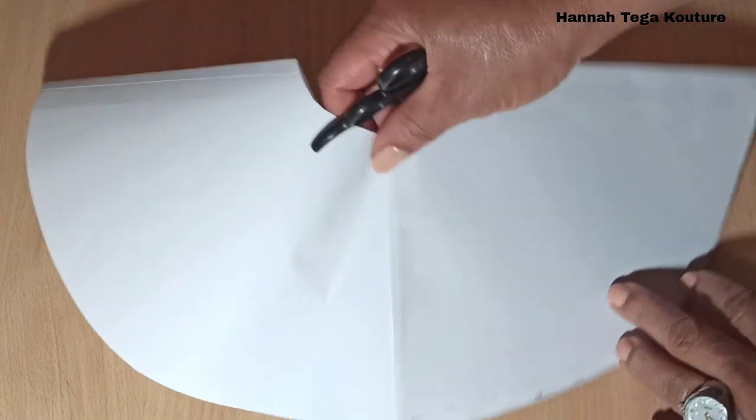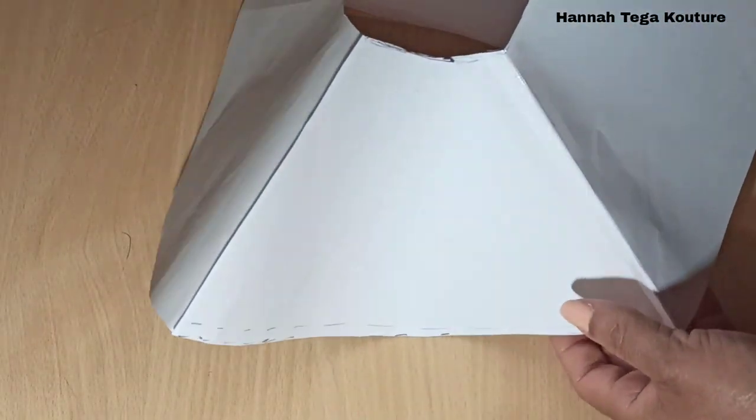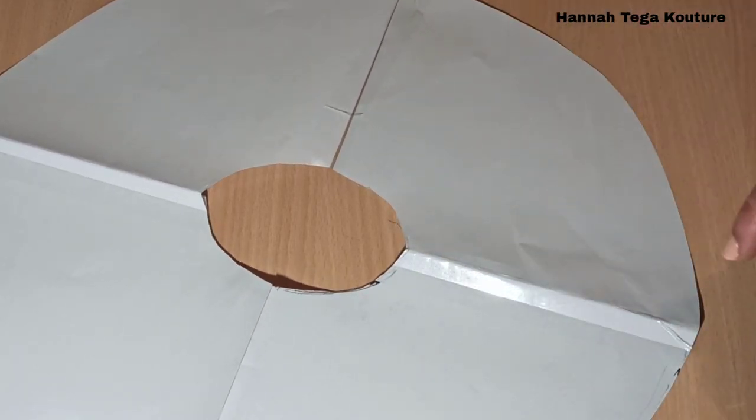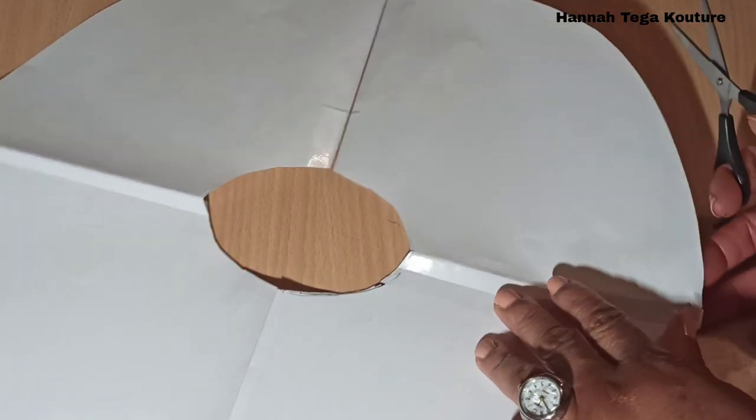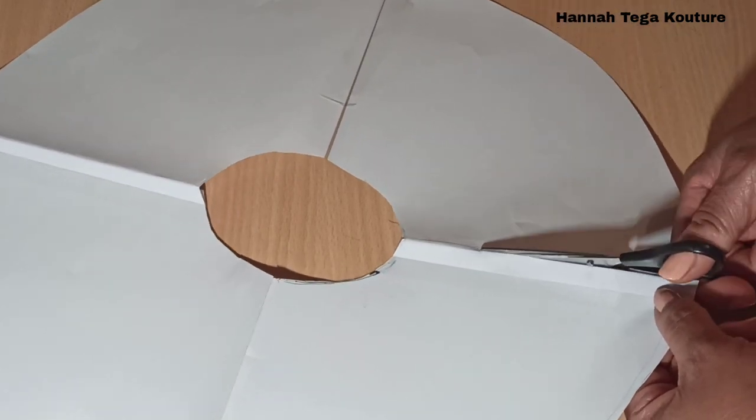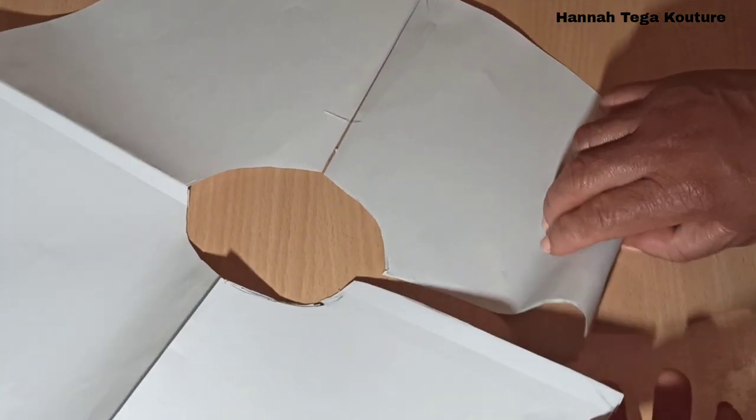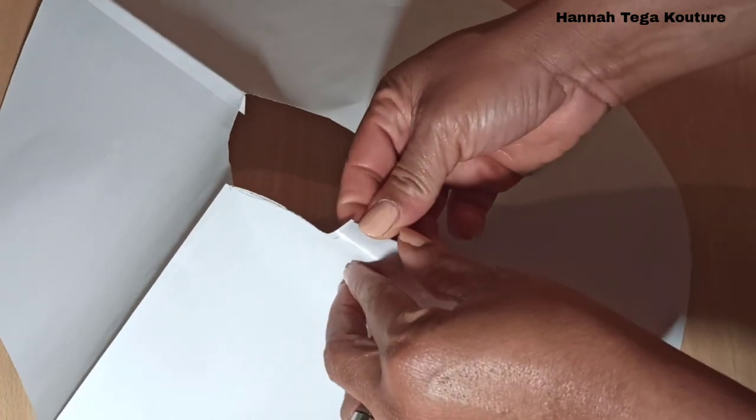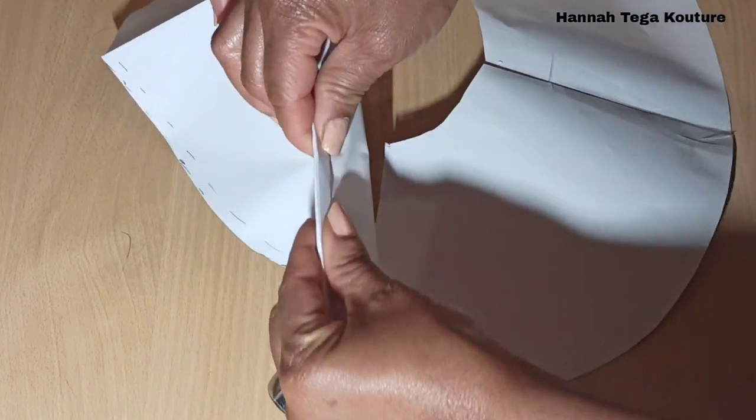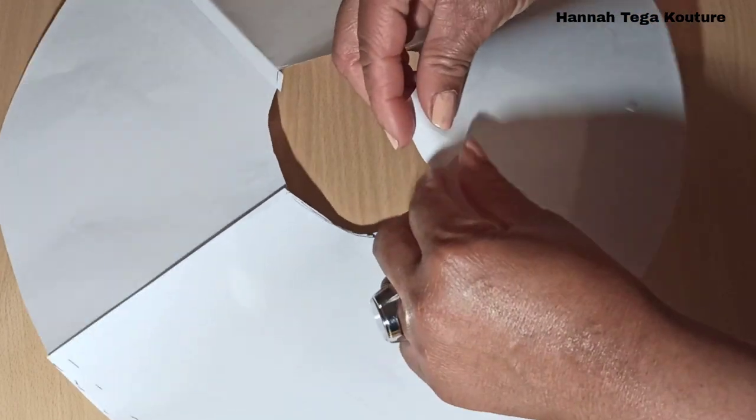You want to fold one end of the skirt like that and just cut open for your zip allowance. Once that is done, you want to fold the zip allowance away and use your iron to iron it down.